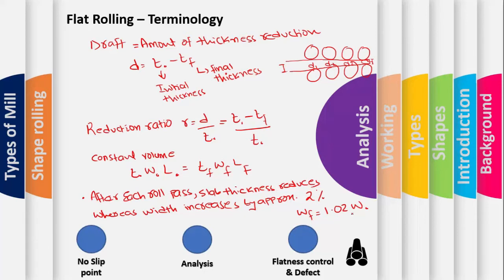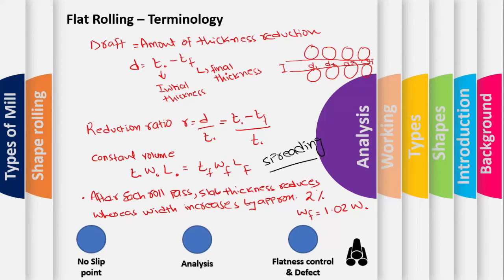Spreading occurs during the rolling operation: there is a reduction in thickness, but at the same time the width of the material increases. The empirical observation is that after each roll pass, the width increases by about 2%, so the final width after each pass is 2% greater than the initial width.